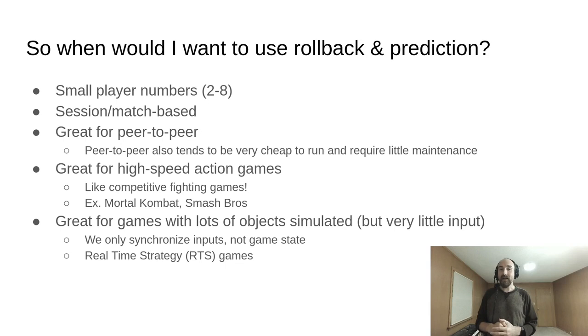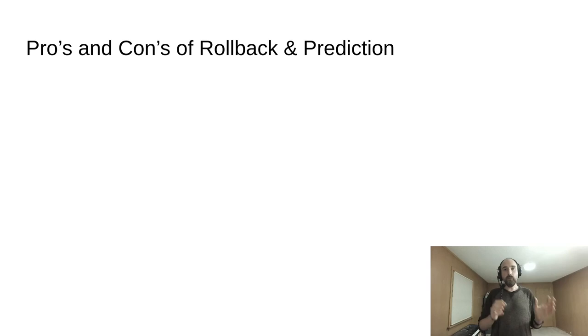If your game doesn't roughly match what I'm laying out here, then rollback and prediction probably isn't the right choice for you, and you should consider some other form of network synchronization. All forms of network synchronization have pros and cons. There is no one right or best form—it depends on your game, your team, and your resources.